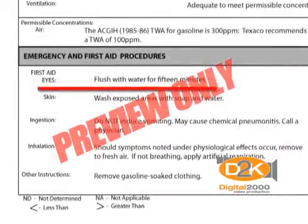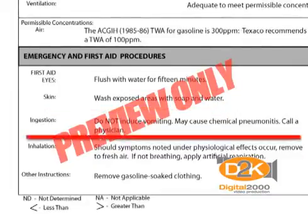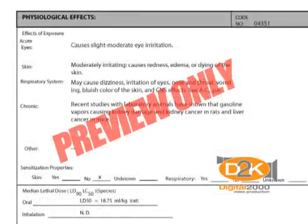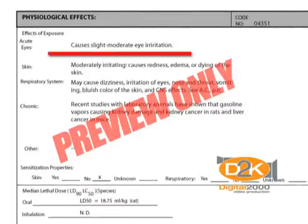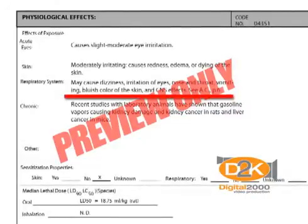If the chemical is ingested, do not induce vomiting — it may cause chemical pneumonitis. Call a physician. Some of the physiological effects of exposure include slight to moderate eye irritation. In the respiratory system, the chemical may cause dizziness, irritation of eyes, nose and throat, vomiting, bluish color of the skin, and other effects.